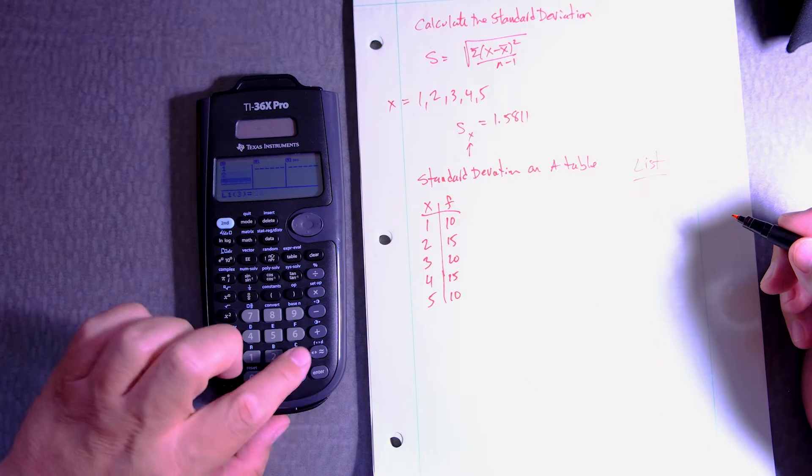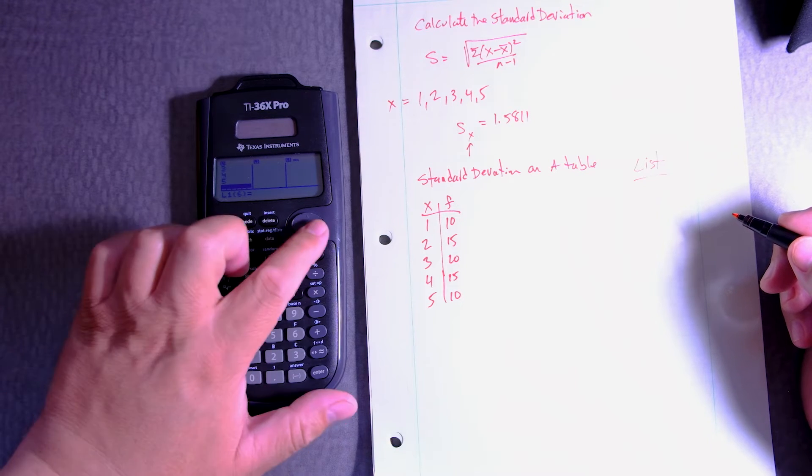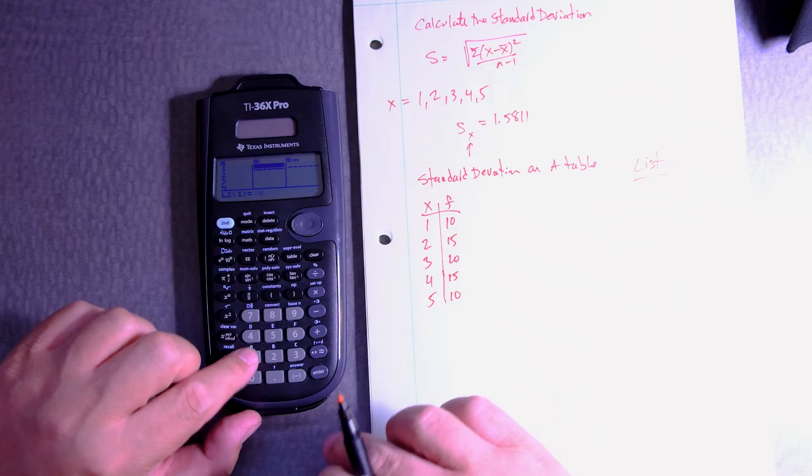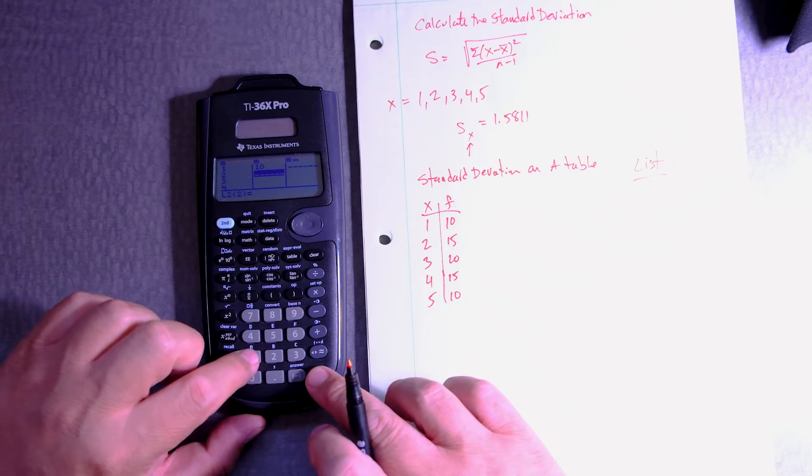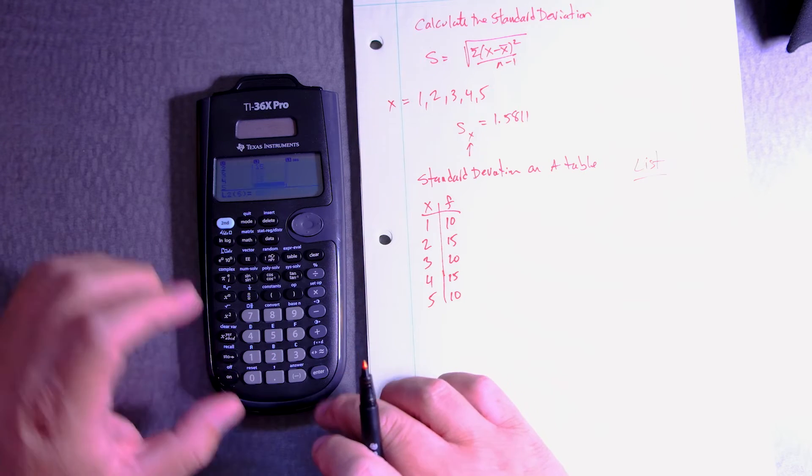So I'm going to put the data: 1, enter, 2, enter, 3, enter, 4, enter, 5, enter. And then we're going to go on the other side: 10, enter, 15, enter, 20, enter, 15, enter, and 10, enter.